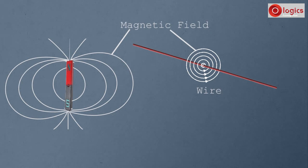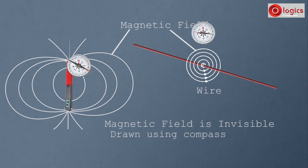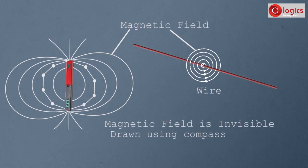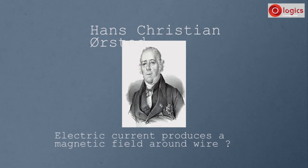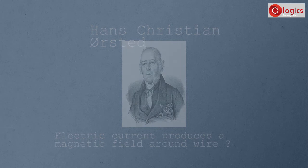Magnetic field is invisible. Then how do we know the magnetic field is formed? Magnetic field is drawn using field lines. Electric current produces a magnetic field — this was proved in 1820 by a Danish physicist, Hans Christian Oersted.